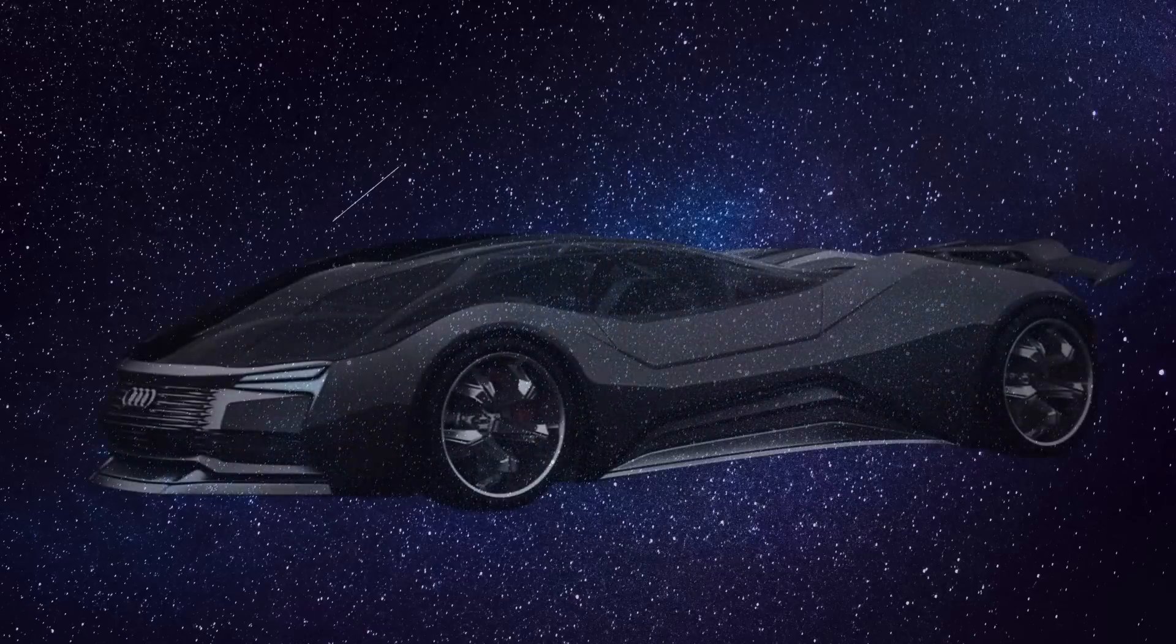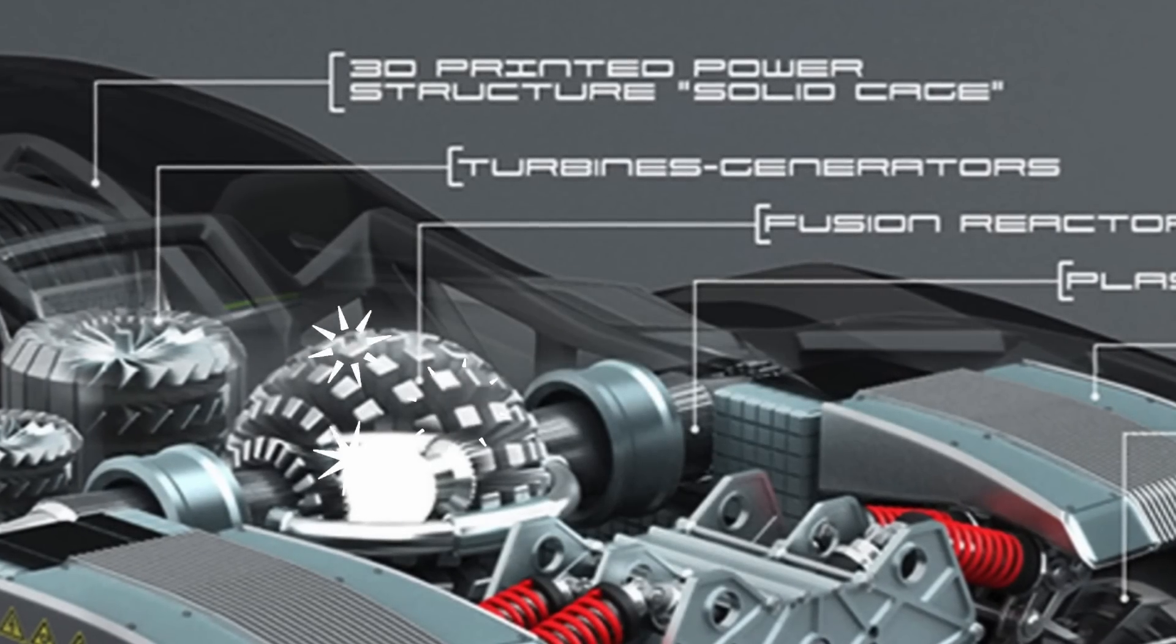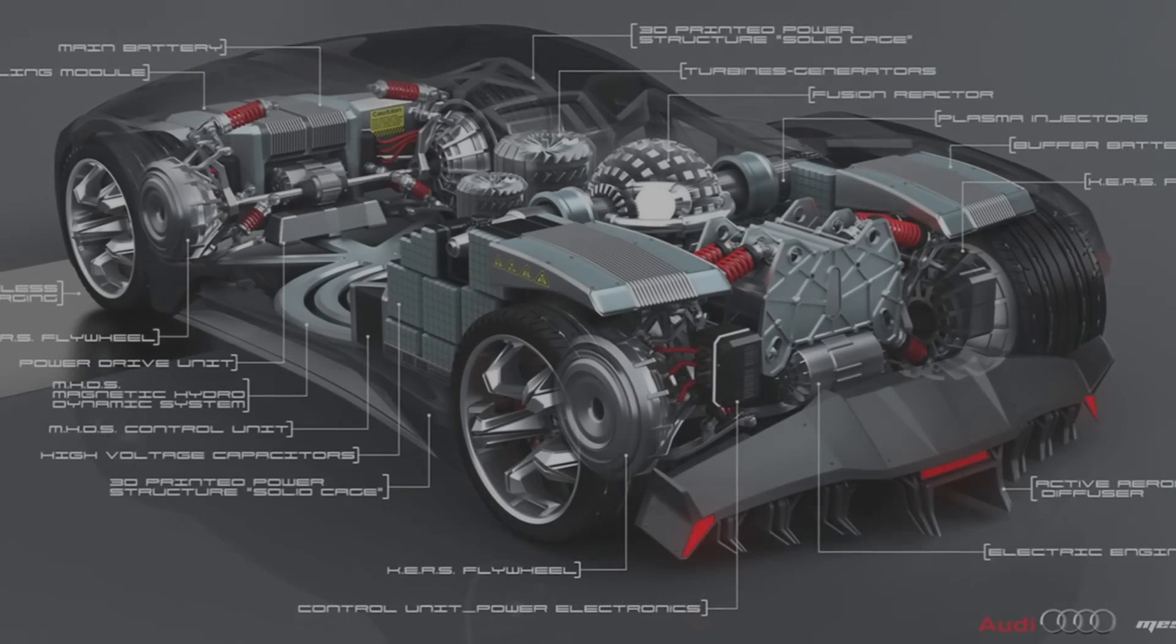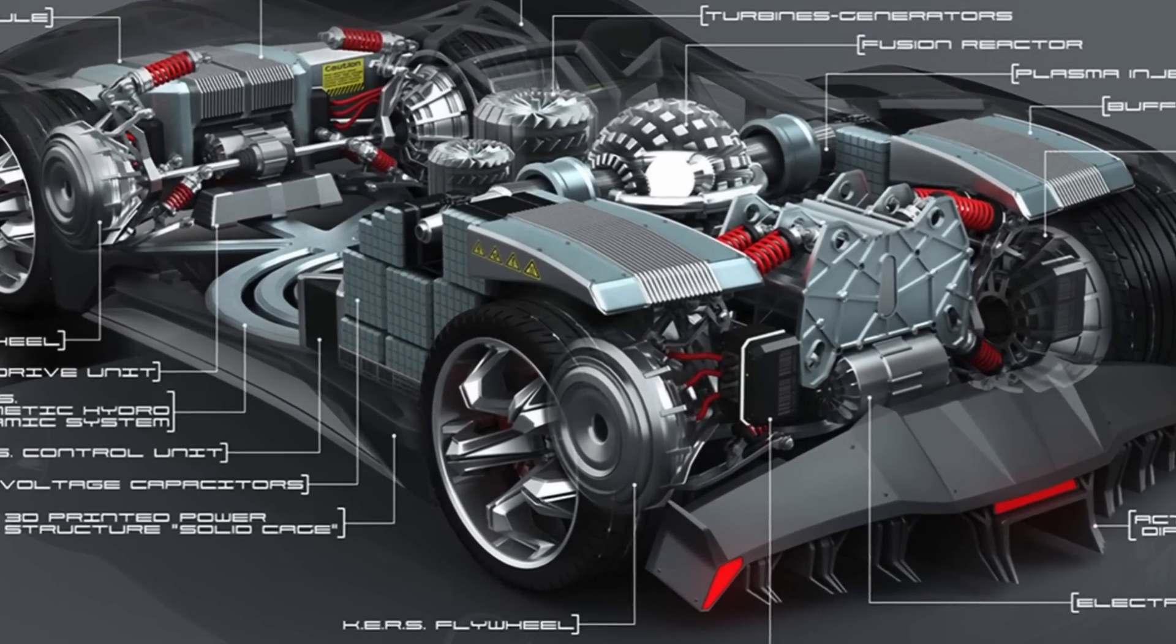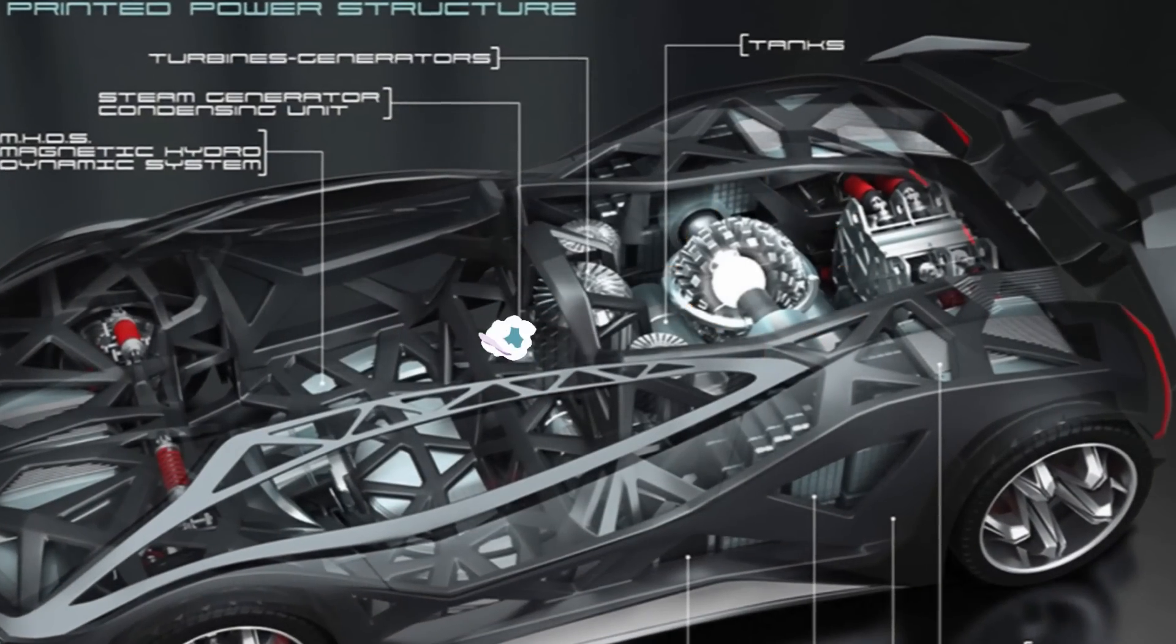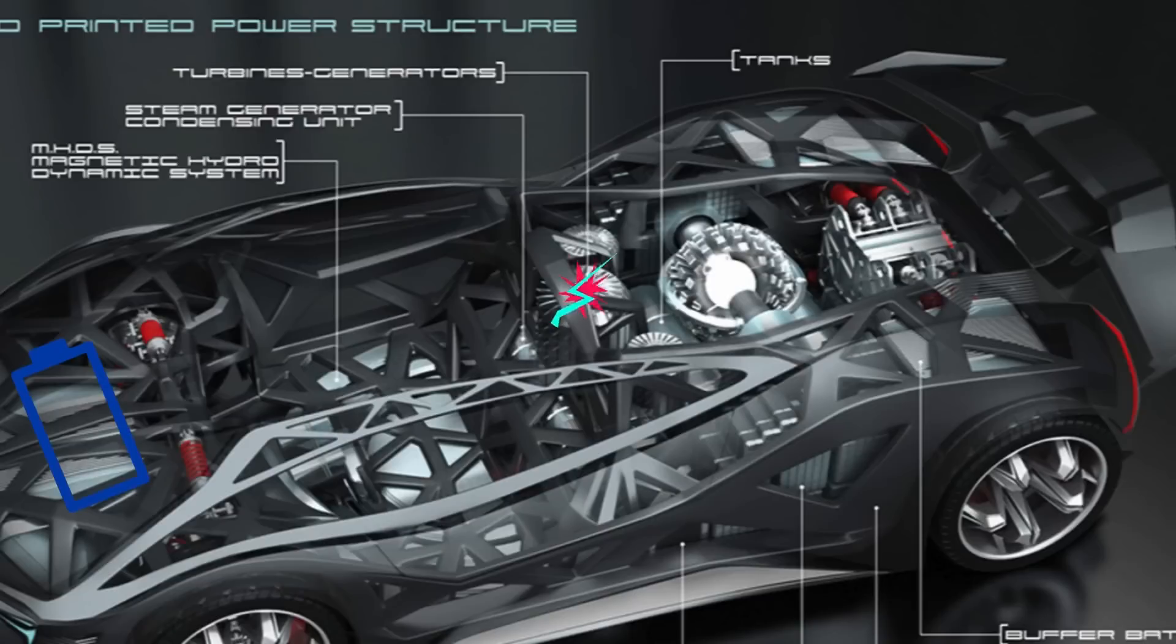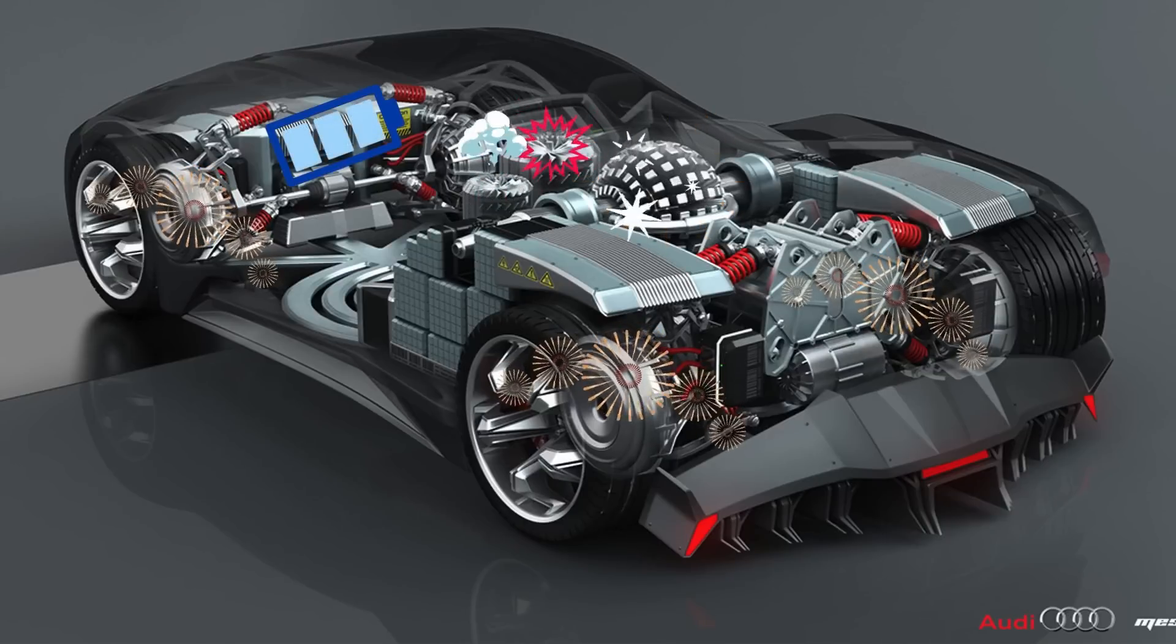The car is called the Mesarthim F-Tron Quattro. This is an electric car powered by a fusion reactor. It has a complex system in which a nuclear reactor and plasma injectors are located in the center of the car. A steam generator next to the reactor uses the heat to spin a turbine connected to a generator, which charges batteries in the front and on the sides of the car. These batteries then power the electric motors in the wheel hubs.